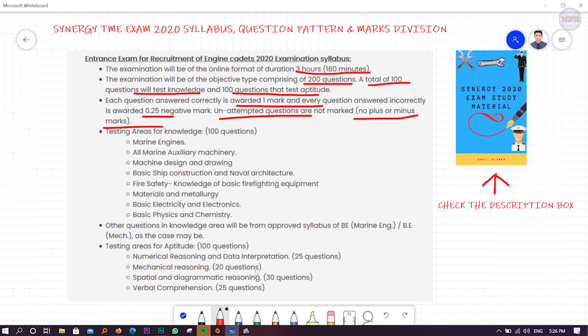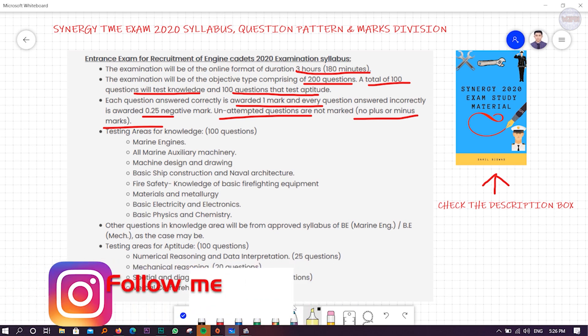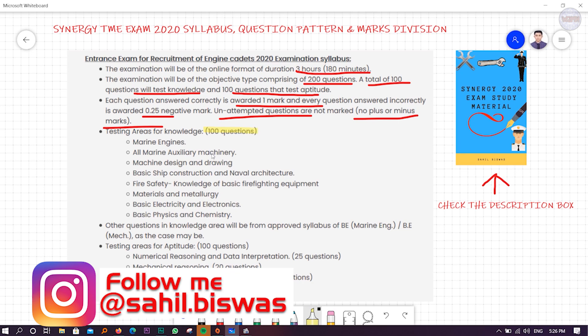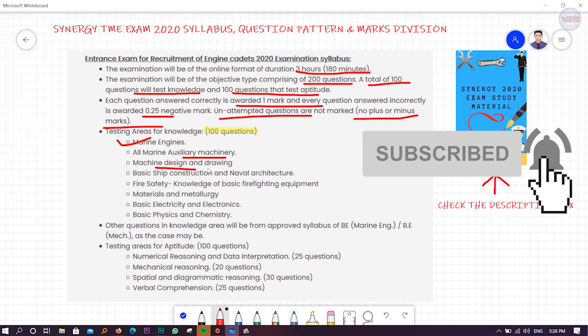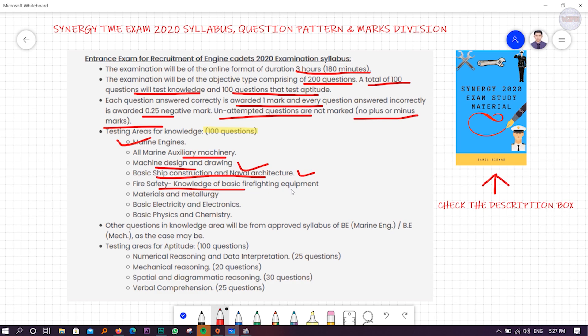As I told you, 100 questions are for the knowledge part. Marine engines, marine auxiliary machinery, machine design and drawing, basic ship construction and naval architecture, fire safety, materials and metallurgy, basic electricity and electronics, basic physics and chemistry - almost all the syllabus you have read in your last eight semesters or four years will be included. I know it's very difficult to cover everything in this short period, which is why we came out with this book.